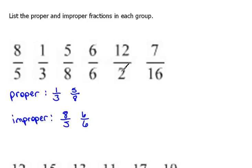The next one, 12 halves, or 12 over 2. The numerator is larger, so this is an improper fraction.